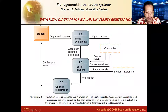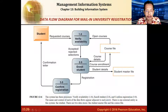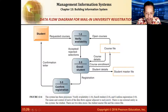This is an online registration for courses that a student takes. First, the student requests a certain course, and in process 1.0 the system verifies whether the course is available — maybe it's in another semester. If the course is available, the student is enrolled and the data goes into the course file database to record the enrollment.